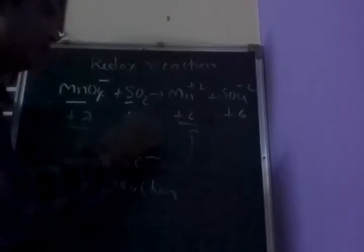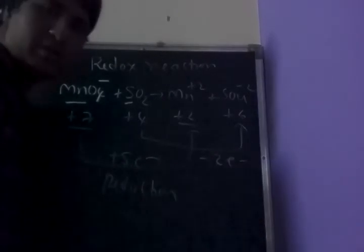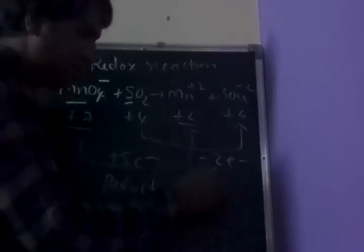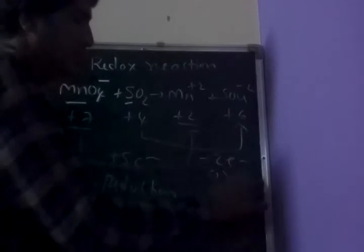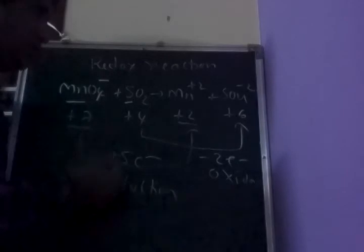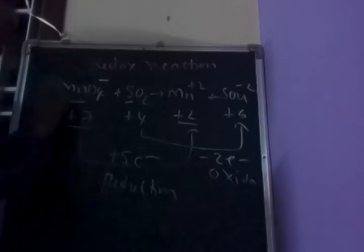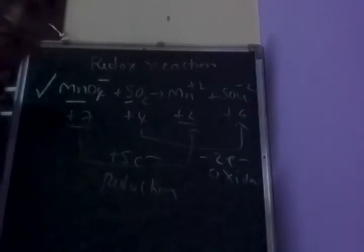Sulfur oxidation state goes from plus 4 to plus 6. It lost 2 electrons. Loss of electrons is oxidation. So both oxidation and reduction take place, making this an example of a redox reaction.